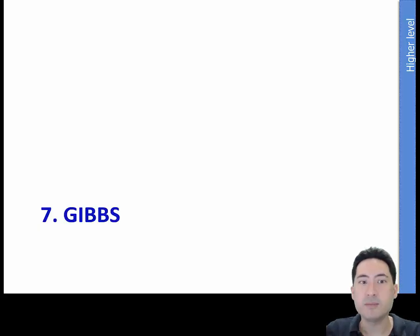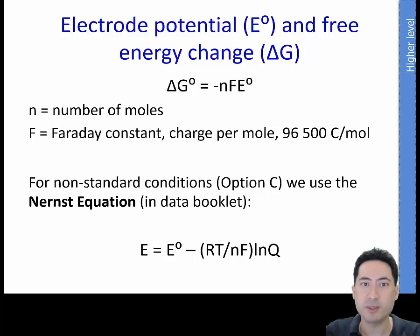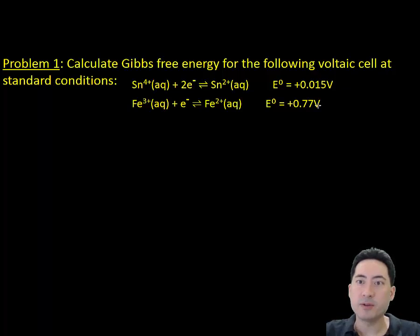Moving on now to Gibbs. The Gibbs free energy change can be taken from this equation that's been derived for us. It's in the data booklet. And of course the Faraday constant is also in the data booklet. If you want to use non-standard conditions, which we will also do in the lab, we use the Nernst equation here. So the problem, calculate Gibbs free energy for the following voltaic cell at standard conditions.